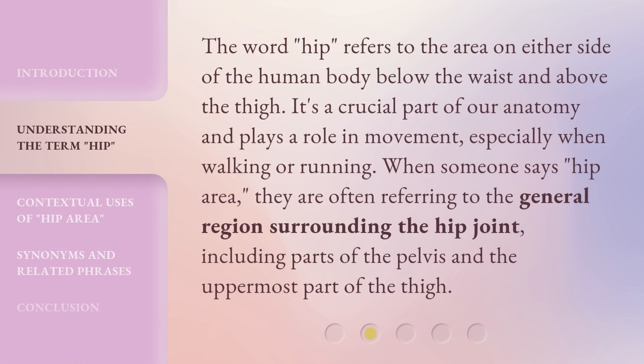The word hip refers to the area on either side of the human body below the waist and above the thigh. It's a crucial part of our anatomy and plays a role in movement, especially when walking or running. When someone says hip area, they are often referring to the general region surrounding the hip joint, including parts of the pelvis and the uppermost part of the thigh.